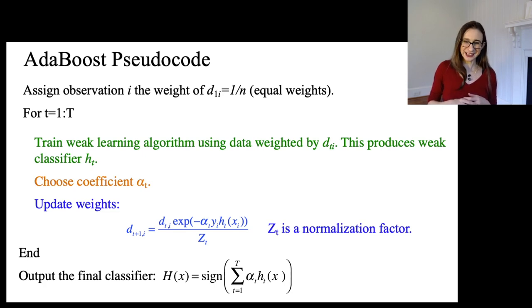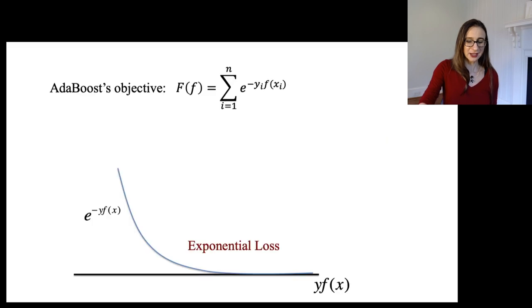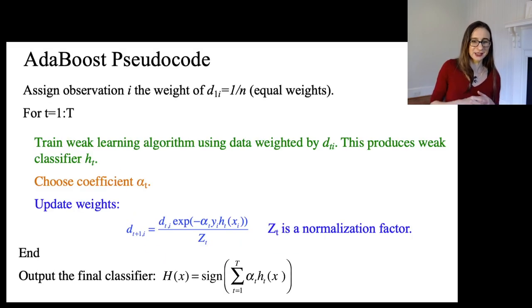So let's take a look again back at AdaBoost pseudocode. So you start with uniform weights over the data points at each iteration. You train the weak learning algorithm, and this produces a weak classifier. And then that's the same thing as, of course, choosing a direction J. And then you choose a coefficient alpha. That tells you how far did you go in direction J. And then you update the weights, which again helps you just transition to the next iteration. And then you output the final combined classifier.